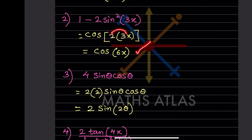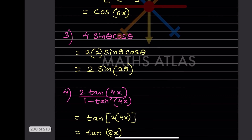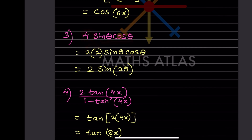The next example is 4sinθcosθ. We don't have a direct formula, so we write 4 as 2×2. Then 2sinθcosθ = sin2θ, so we have 2·sin2θ.